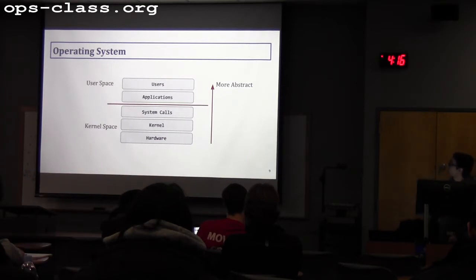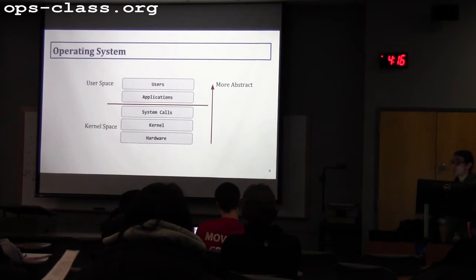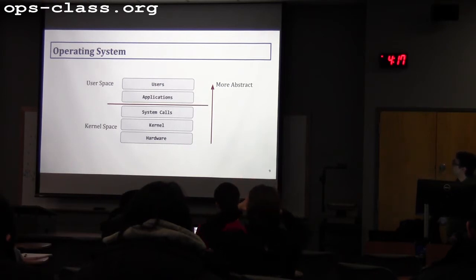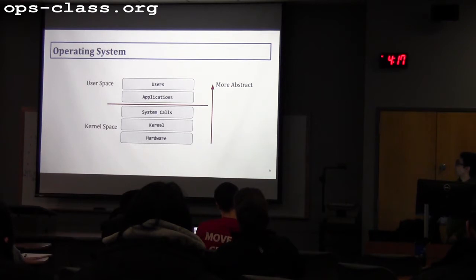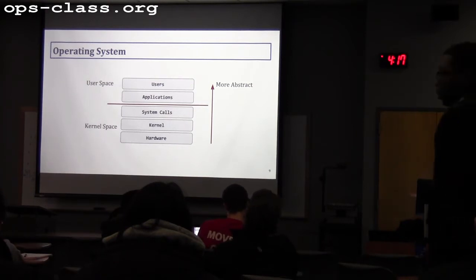For example, in C, when you call printf, the C library handles all the formatting, but for writing to standard output, it calls the write system call for the kernel to put the string on screen. The system call is the interface between user and kernel. From the system call downward is kernel space; from the system call upward is user space.